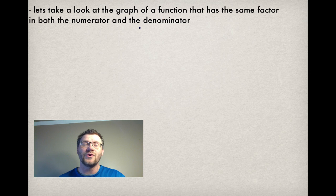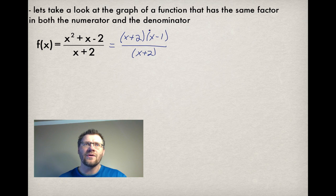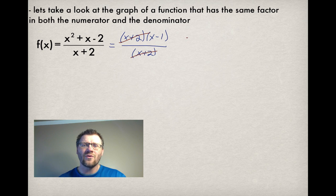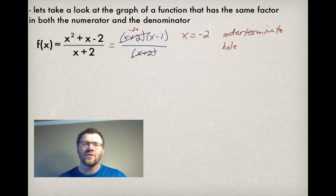Let's look at a function that has the same factor in both the numerator and denominator. f(x) equals x squared plus x minus 2, all divided by x plus 2. Factoring the top gives (x plus 2)(x minus 1), and the bottom is (x plus 2). We said any factor in the top is an x-intercept and anything in the bottom is a vertical asymptote. However, when we have the same factor in both, they cancel each other out. So x equals negative 2 isn't actually an x-intercept or a vertical asymptote — it is what we call indeterminate. If we plug x equals negative 2 into the original function, we get 0 divided by 0, which has no value.